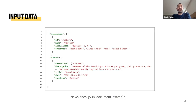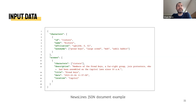Here is an example of the JSON structure used to represent input data. There are two major sections defined: one section where the characters are defined, and another section describing the scenes, including the characters that participate in each one of the scenes.